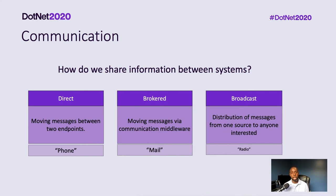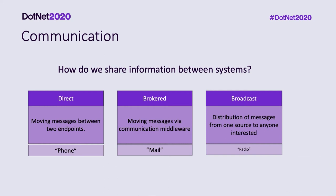One of the first things we should think about as we're designing our distributed systems is how exactly are they going to communicate with each other — how do I get information from one part to another, or to all the different services that need to know about it? There are a few options: a direct model where you send the message directly to the party that needs it; a brokered model with something like a message queue or middleware doing intelligent routing; or a broadcast where you send a message out and whoever is interested picks it up.